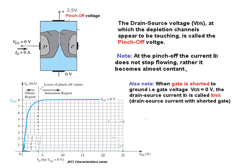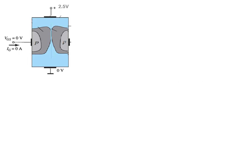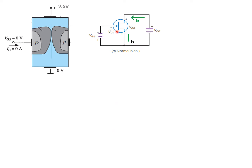Note that the gate is shorted to the ground, so the gate voltage VGS is 0. This curve shows the drain current ID due to gate voltage 0. The drain current ID at this condition is called IDSS. The maximum ID is called IDSS, which means drain-source current with shorted gate. This is shown in the schematic diagram of the JFET — the drain current ID passing through becomes the source current.